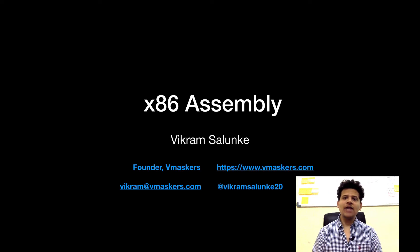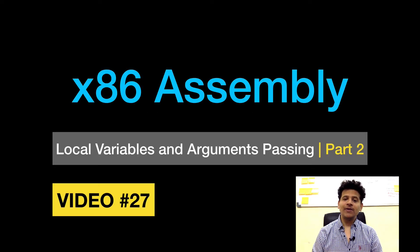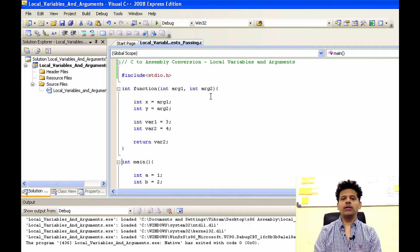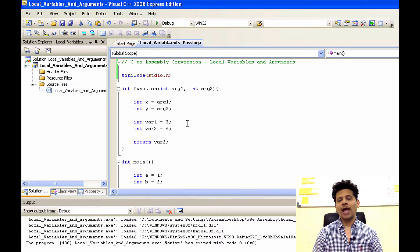Hey everyone, I am Vikram Salonke and welcome to x86 assembly. This is video number 27 and this is part 2 of local variables and arguments passing. In this video, we will execute our C program and we will analyze execution of assembly instructions in Visual Studio. Let's get started. This is our C program. We already built the program in our last video, so if you want to know what happens when you click on build or debug, please watch my last video.